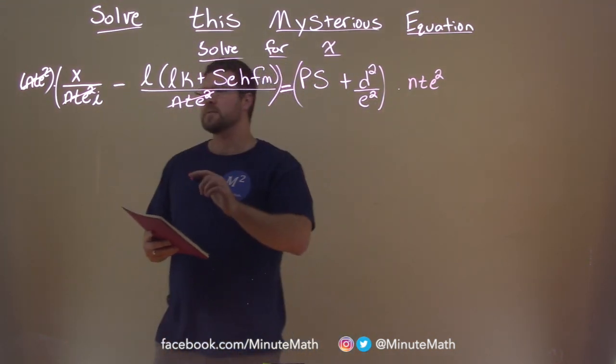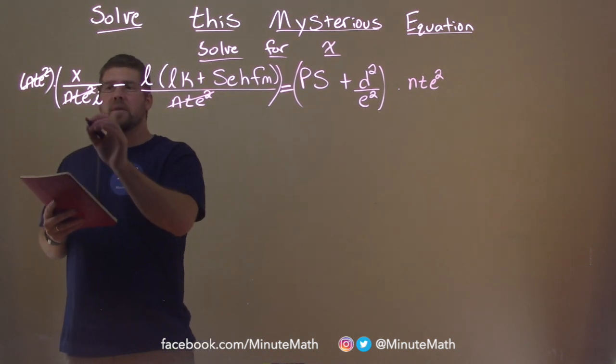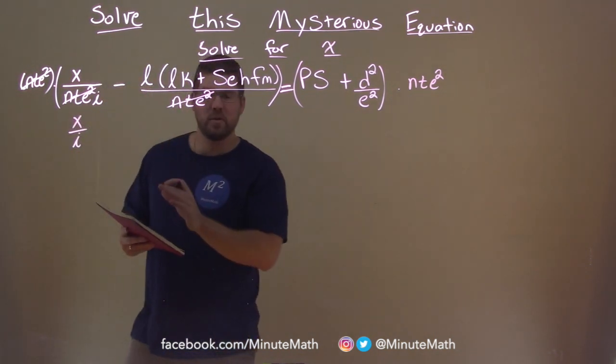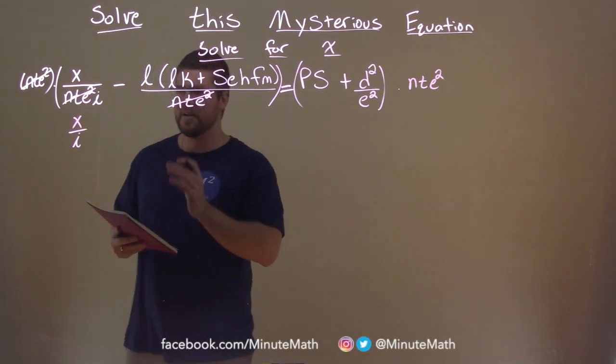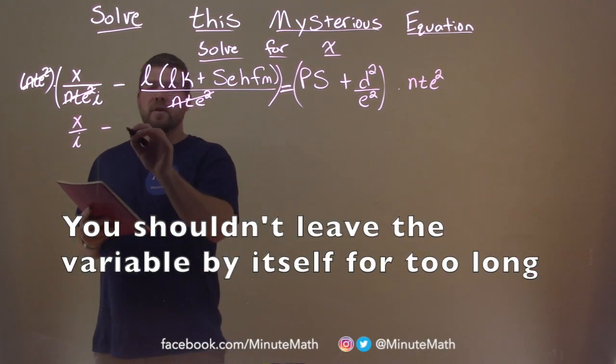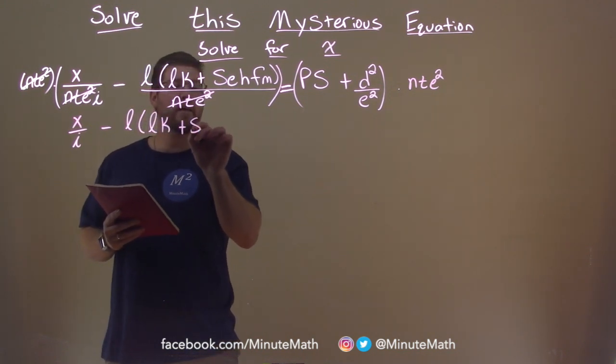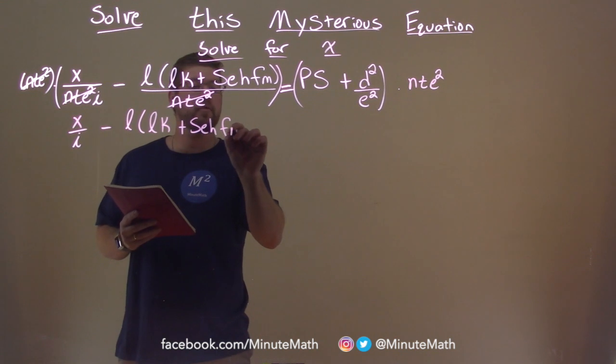So let's simplify this side first. We're left with x over the i, and don't forget the i, it's still there. It's like its own little cell. Eventually we'll release it. And we're left here with l times lk plus sehfm.